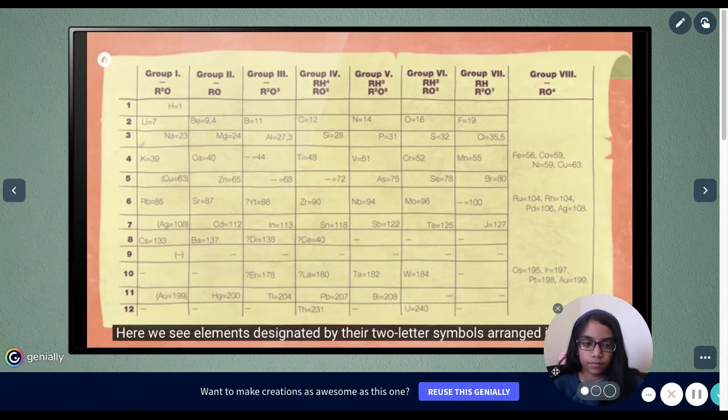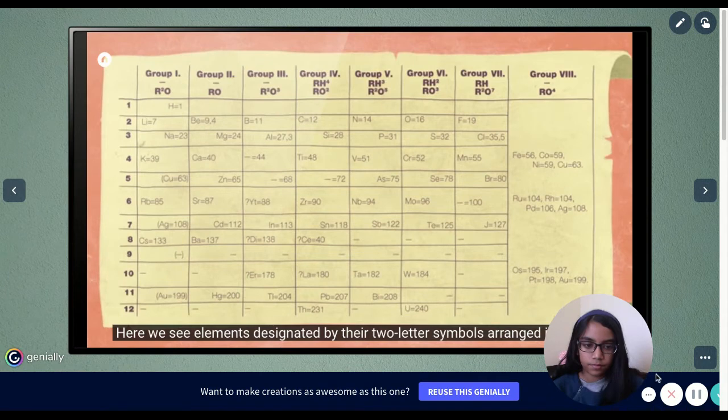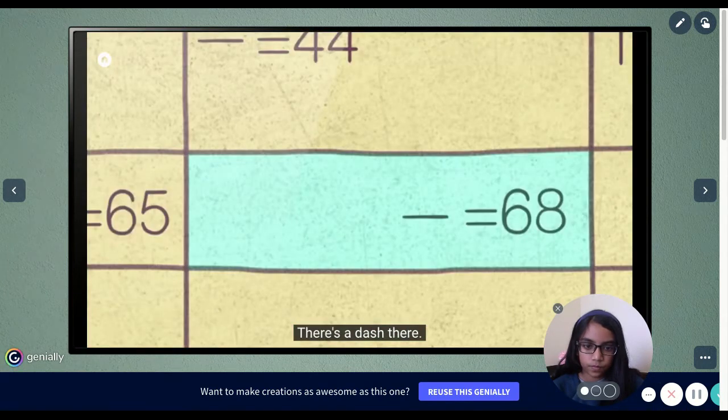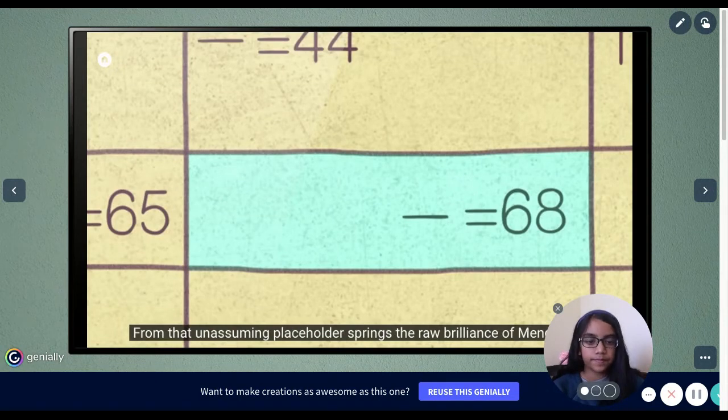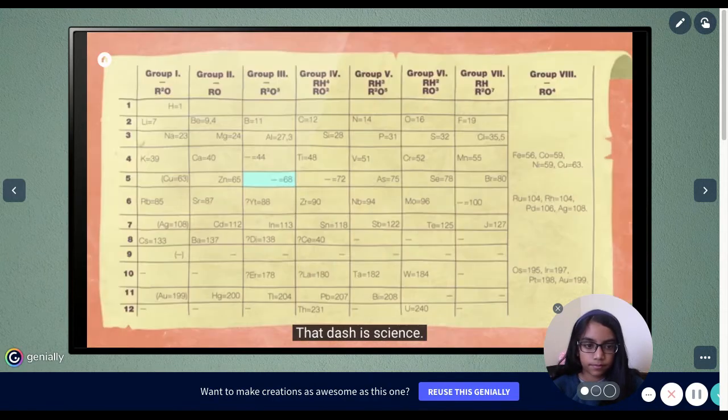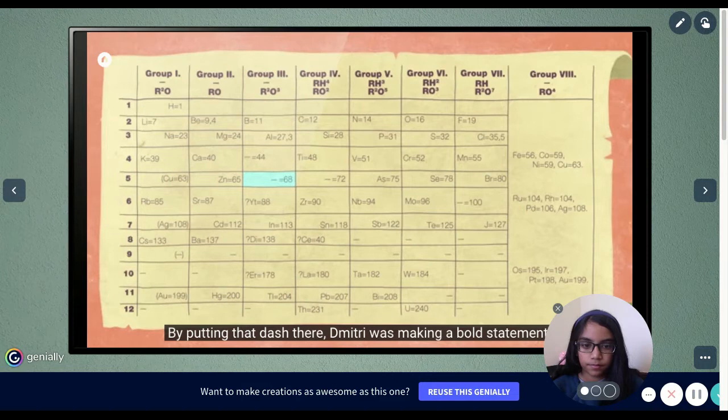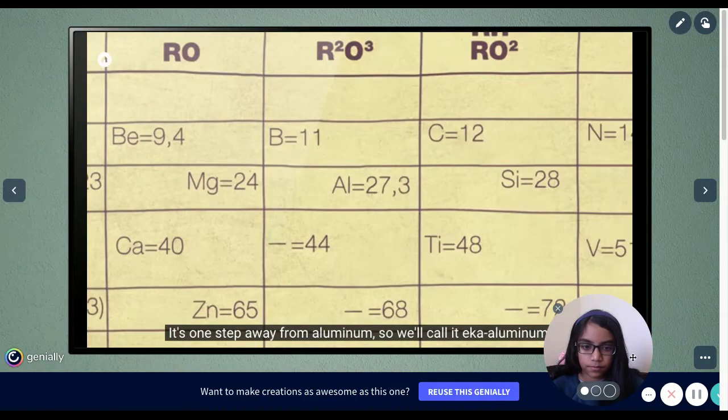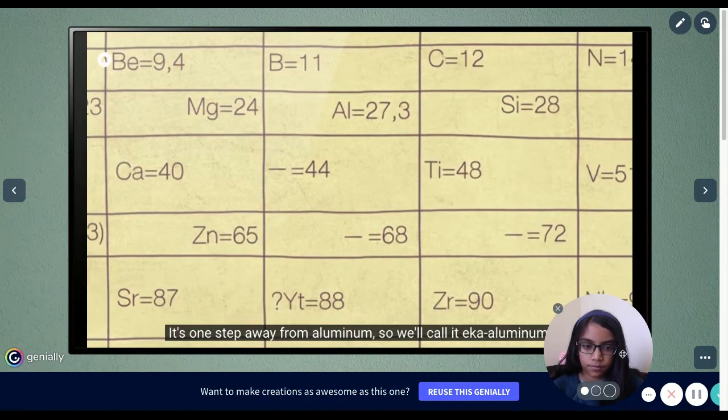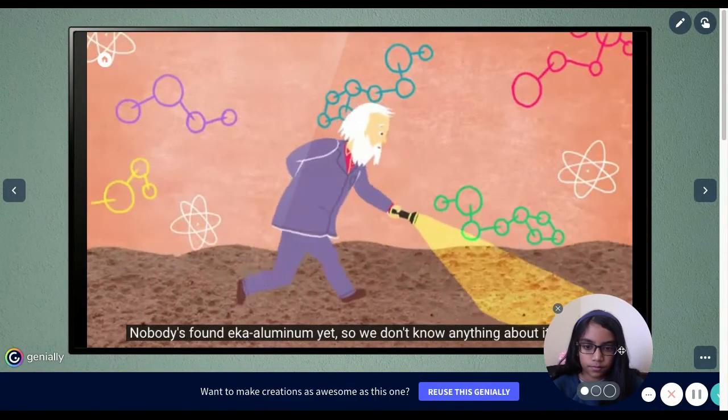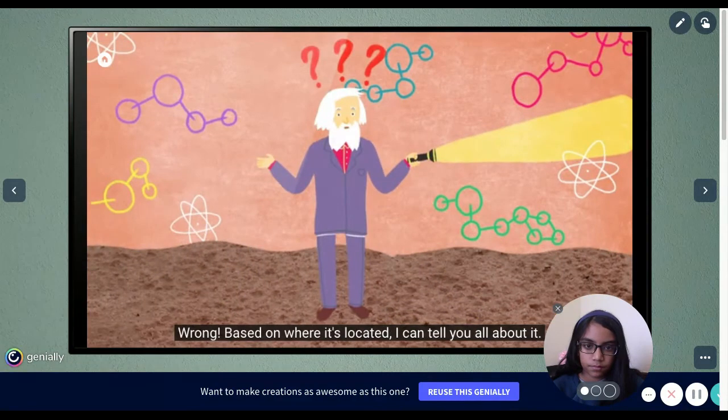Let's look at one of the first versions of the periodic table from around 1870. Here we see elements designated by their two-letter symbols arranged in a table. Check out the entry of the third column, fifth row. There's a dash there. From that unassuming placeholder springs the renown of Mendeleev. That dash is science. By putting that dash there, Dmitry was making a bold statement. He said, and I'm paraphrasing here, y'all haven't discovered this element yet. In the meantime, I'm going to give it a name. It's one step away from aluminum, so we'll call it eka-aluminum. Eka being Sanskrit for one. Nobody's found eka-aluminum yet, so we don't know anything about it, right? Wrong.